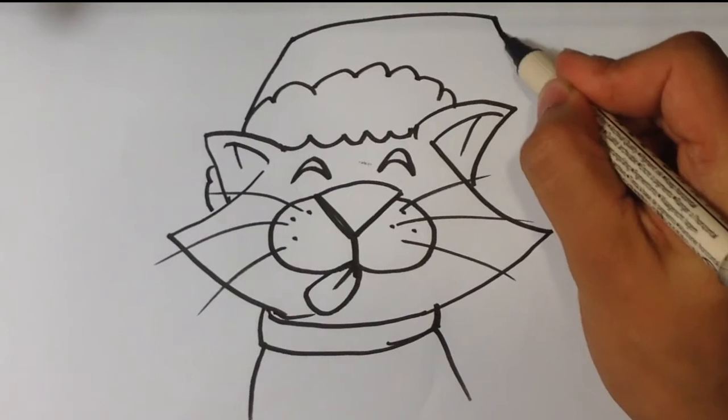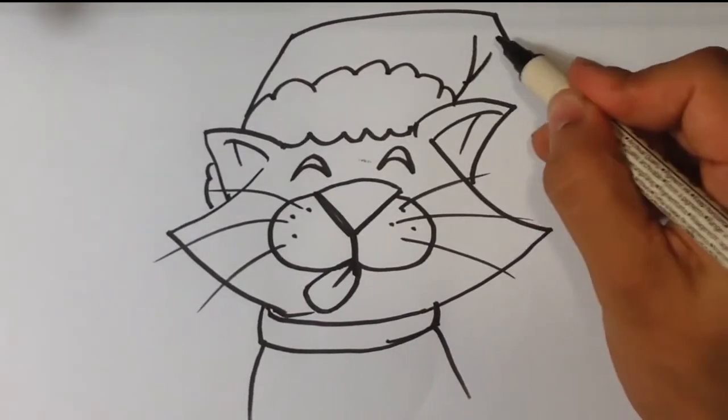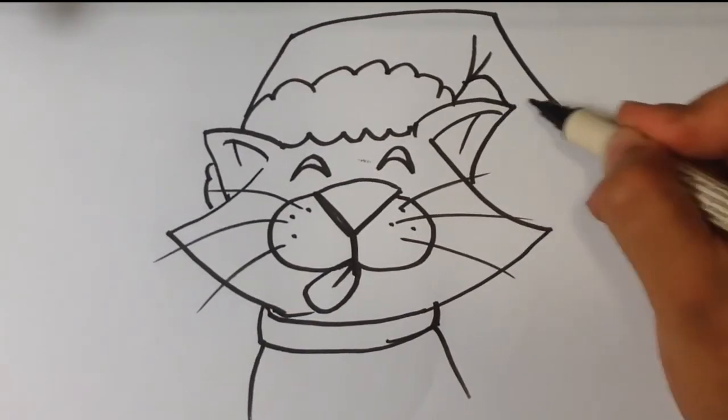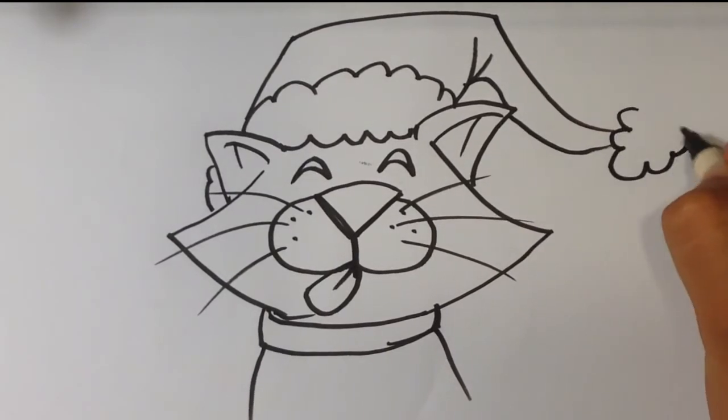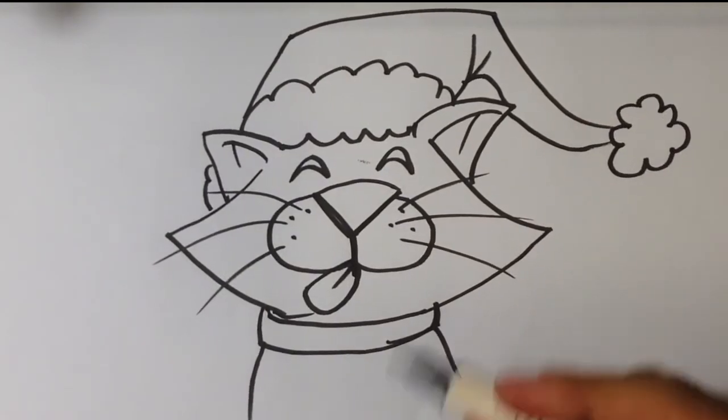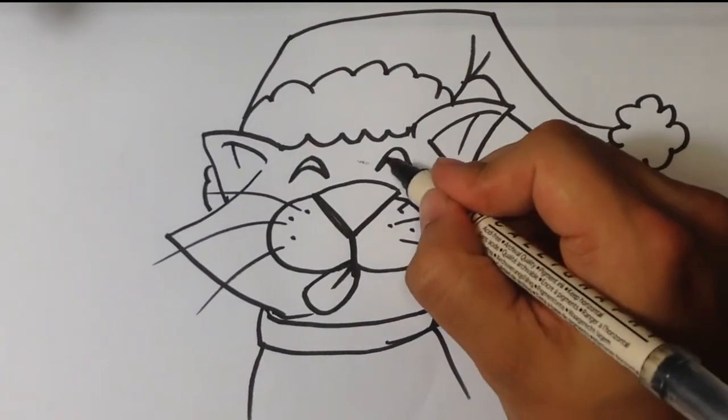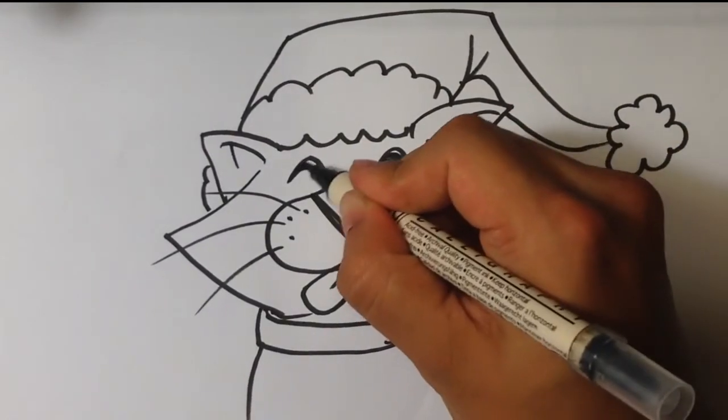And then I'm going to draw the upper portion of the Santa hat. Some folds here because it should be bending around. And then the ball is also going to be this little cloud shape. And fill that in.